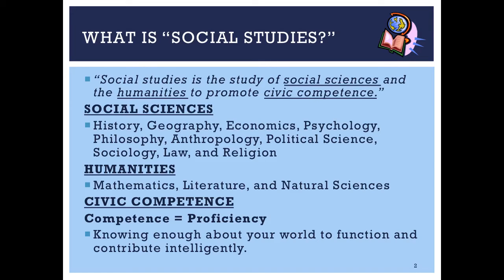Finally, we have civic competence, and this is something near and dear to my heart. Competence means proficiency — basically meaning you know what you're supposed to know and you can prove it. Civic means having to do with our day-to-day life, participating in government, and being citizens. If you're not competent in that area, when you do things like voting you may not make the best judgments. Being civically competent is the reason we have social studies classes — it basically means knowing enough about your world to function and contribute intelligently. It's one thing to function in society, but being able to contribute to society is what we want every citizen to be able to do.